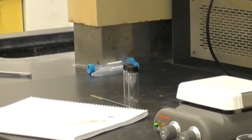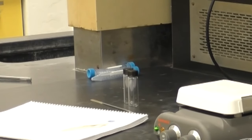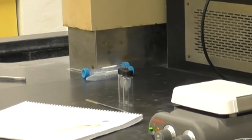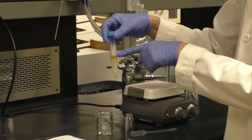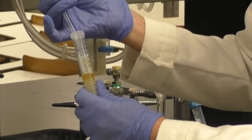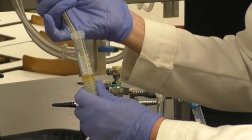While the layers are separating, pre-weigh a clean 4-dram vial and record the weight in your lab manual. Once the solution is separated, carefully remove the top layer which is the eugenol and place it in your vial.